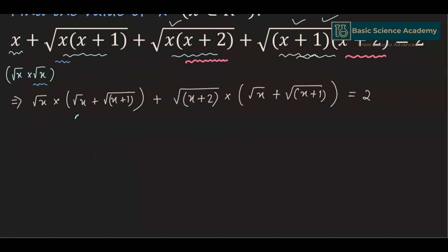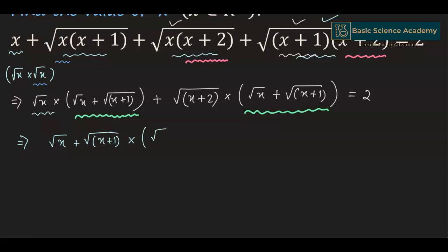Now we have (square root of x + square root of (x+1)) common in these two terms. Taking that common gives us (square root of x + square root of (x+1)) multiplied by (square root of x + square root of (x+2)), and this equals 2.